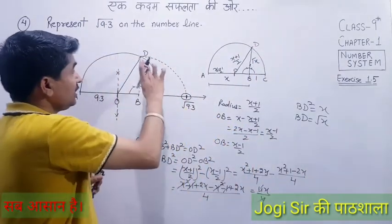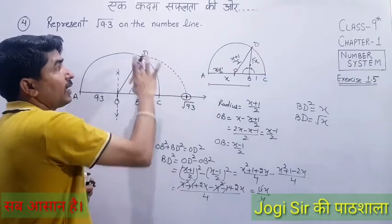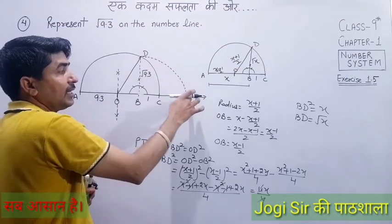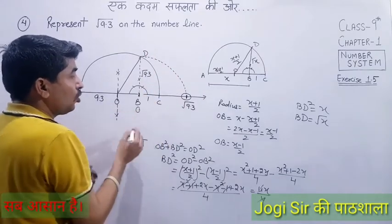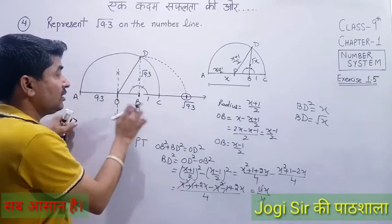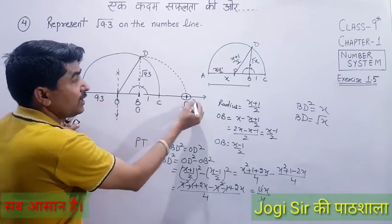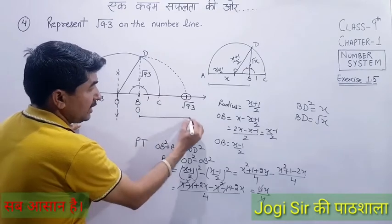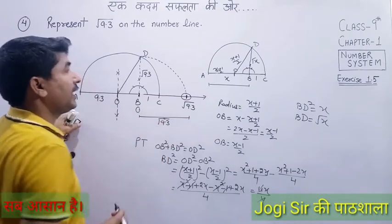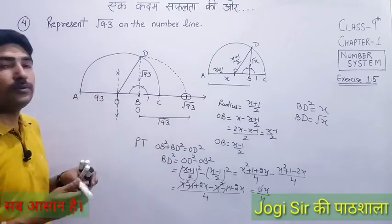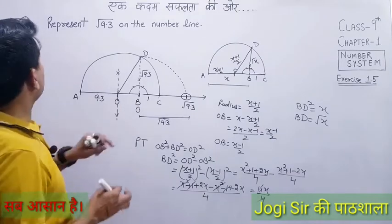Therefore BD = √x. Since x = 9.3, BD = √9.3. Now to represent this on the number line, place the compass at B with radius BD and mark the arc. Here is our 0, 1, 2, 3 and so on — and the point marked is √9.3. This is a very important question.